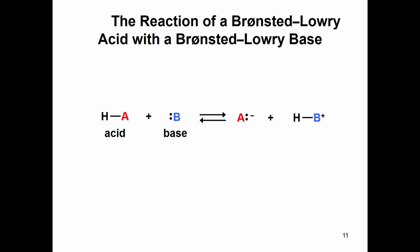Now we're just going to look at how the reaction actually occurs. Here we just have a general acid — A for acid — and it has a hydrogen on it because that's our definition. And then we have a base, and we said that our base has to have a lone pair. What happens is really about the electrons.